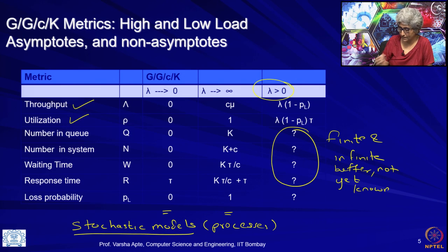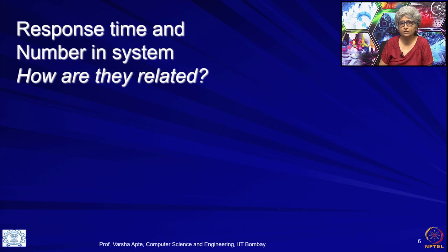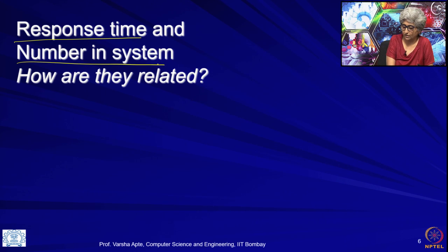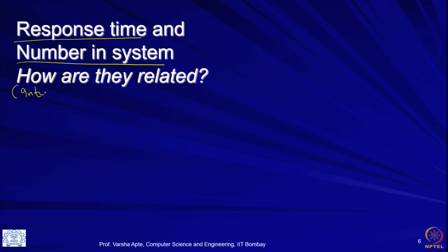In the last class I mentioned we need stochastic processes to do this, but we are not yet going to do such advanced mathematics. We will continue using laws and rules that are more intuitive. In that journey, the next thing to learn is Little's Law, which does not directly allow us to calculate each metric, but gives us a relation between them. First, I want everybody to think about how response time and number in the system might be related.